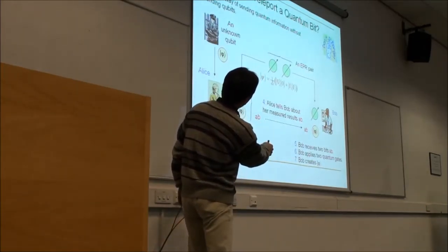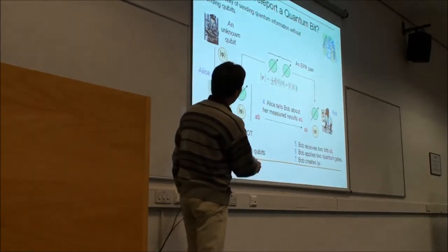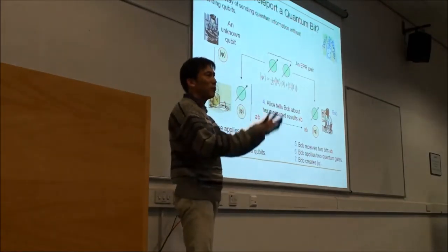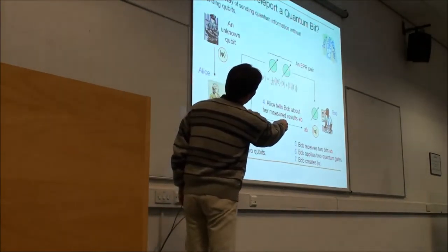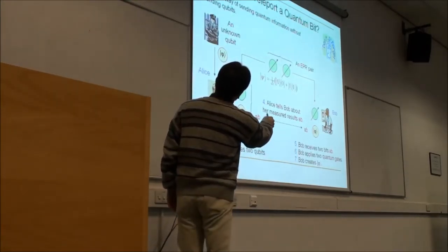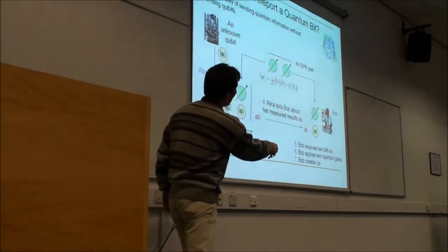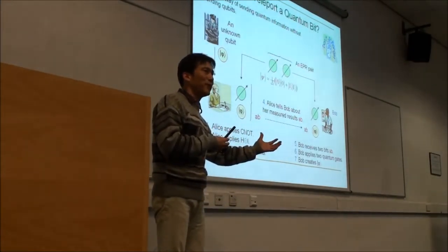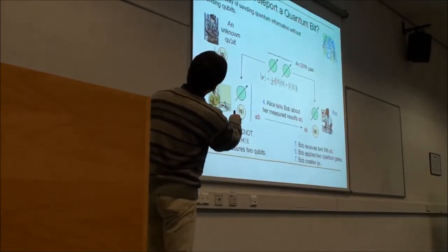Suppose we prepare an EPR pair: (|00⟩ + |11⟩), so there's a 50% chance the first qubit is 0 and the second is 0, and 50% the first is 1 and the second is 1. We have two particles — one particle is taken by Bob and stored, and Alice does the same. The problem is that we can't look at what it is, because looking at the particle destroys the quantum state. So you have to keep it as-is.